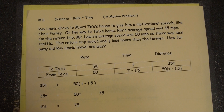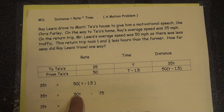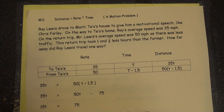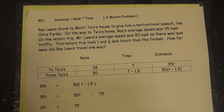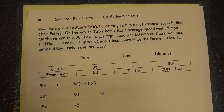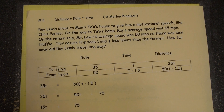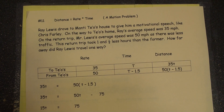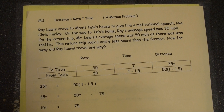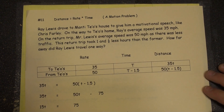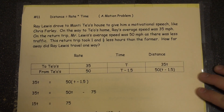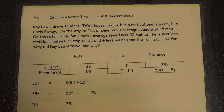Distribute. What I did here is I went ahead and subtracted 35, moved the 75 over, but then I switched 15T and 75 around. And when you divide by 15, you get T equals 5 hours. How do we know it was hours? Because it was miles per hour.